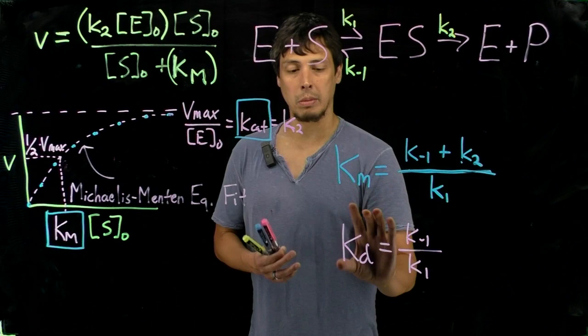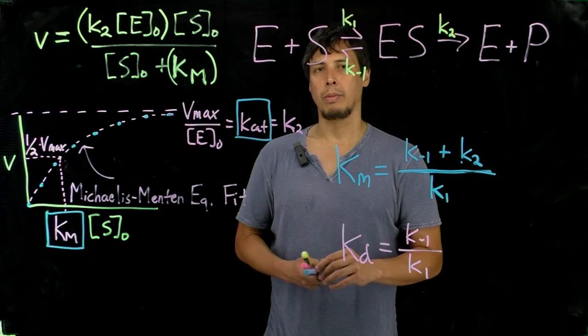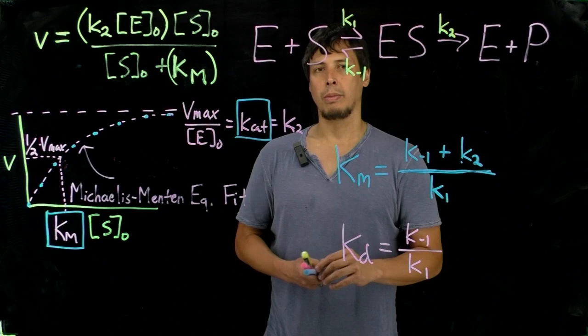And this is not going to resemble the binding affinity at all. It's not going to resemble the actual dissociation constant. So, you have to be careful on how you interpret Km in this case. But it does give you an idea of a range or a ballpark for what the affinity for the substrate for the enzyme might be.